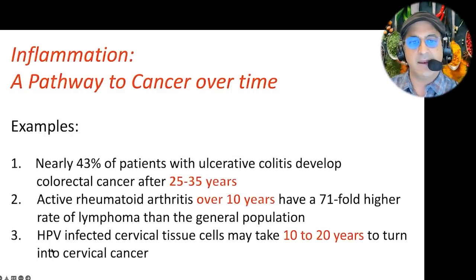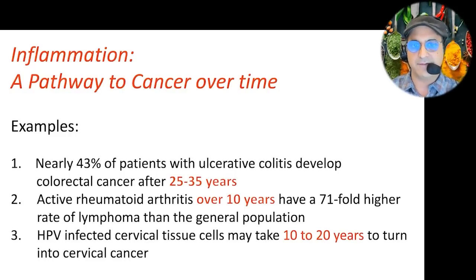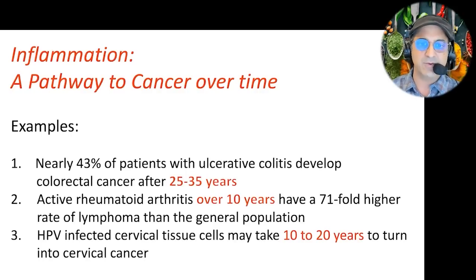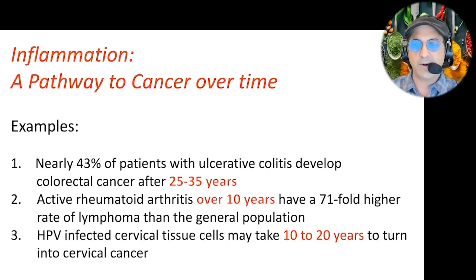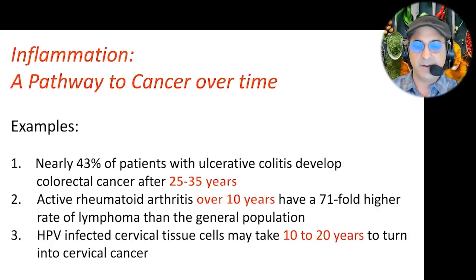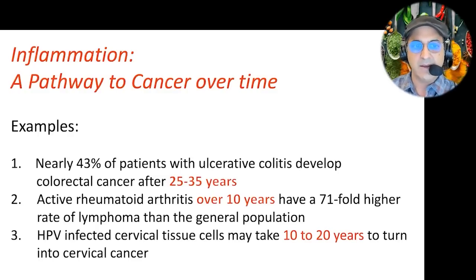The increased risk of cancer is there over time with chronic inflammation. For example, 43% of patients that have ulcerative colitis, in about 30 years on average, will develop colon cancer. Someone with active rheumatoid arthritis, over 10 years if not well controlled, has a 71-times higher risk of getting a lymphoma. HPV is a virus that, if chronically present over 10 to 20 years, has a higher risk of turning into cervical cancer. So the goal is to reduce inflammation not only short-term, but long-term, and for the most severe conditions like cancer.